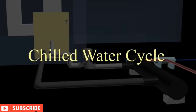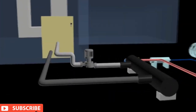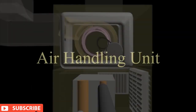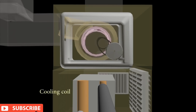Chilled water cycle. The chilled water cycle consists of two basic components: the air handling unit and water pump. The air handling unit is a place where cold air is produced before it is distributed. It consists of several key components such as cooling coil, fan, fan motor, belting, filters, and the casing.